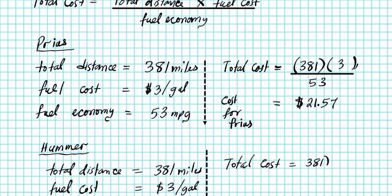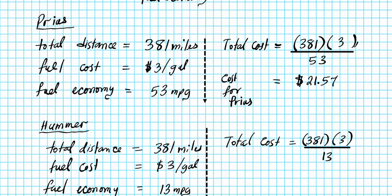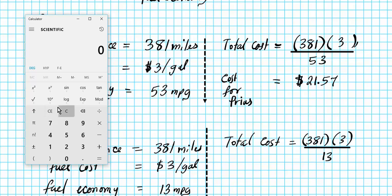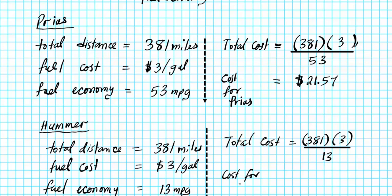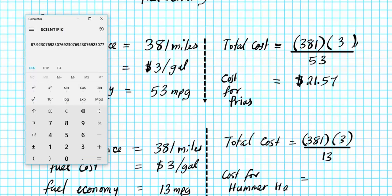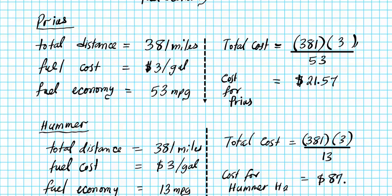We're going to use the same formula, total distance times fuel cost divided by fuel economy. So total distance 381 miles, the cost of gasoline at this point in time is three dollars per gallon, and we divide that by the fuel economy for the H2, which is 13 miles per gallon average between the city and the freeway. So we have 381 times 3 divided by 13 and it costs you eighty seven dollars and 92 cents just one way. So it costs for the Hummer H2 eighty seven dollars and 92 cents.